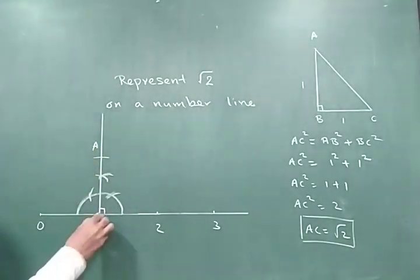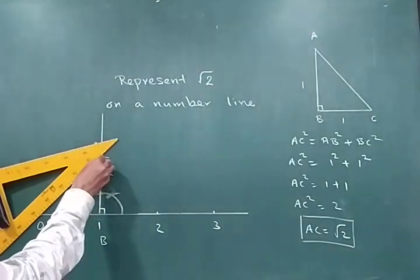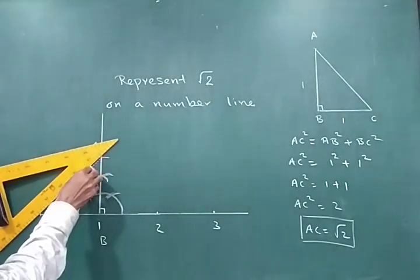So this is my point A, this is my point B. Let's say this point represents M. So now I am going to join point M to A.